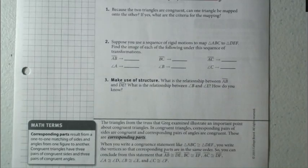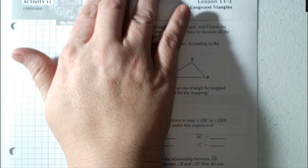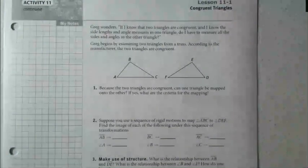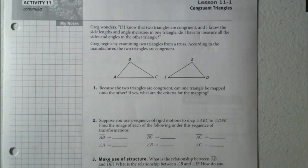Take a look at the next page. The next page starts off by saying Greg wonders if I know that two triangles are congruent and I know the side lengths and angle measures of one triangle, do I have to measure all the sides and angles of the other triangle?